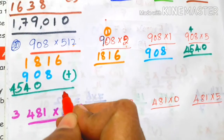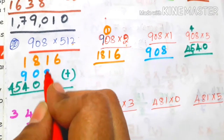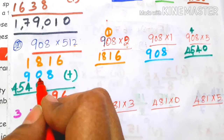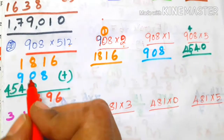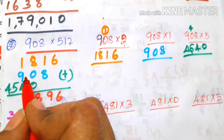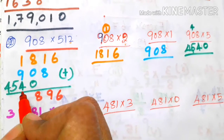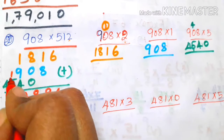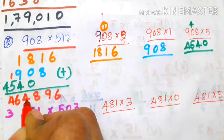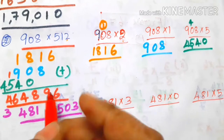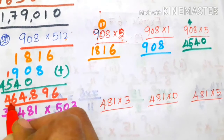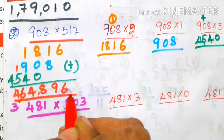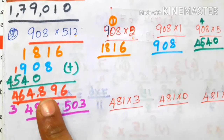Adding: 6, then 8 plus 1 is 9. Next, 8 plus 0 is 8. Then 1 plus 9 is 10, plus 4 is 14, so 4, balance 1. 1 plus 5 is 6. Next, 4. So counting: ones, tens, hundreds, thousands, ten-thousands — the answer is 464,896.